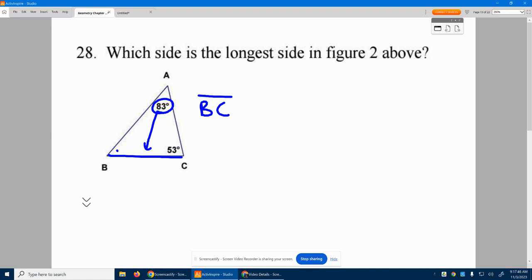Well, let's see. Let's just double check that this angle right here is less than 83. So all angles in a triangle add up to 180. We have one that's 83, one that's 53. When we add them, we end up with how much?